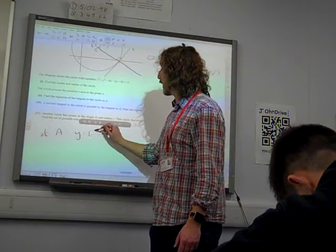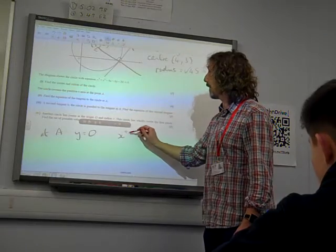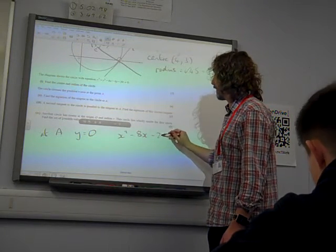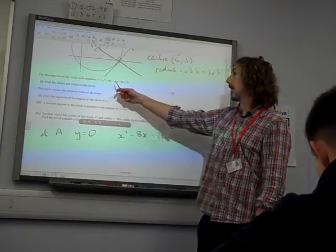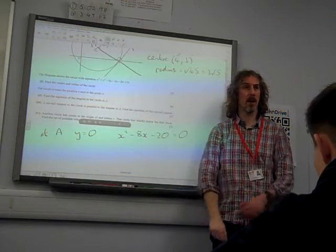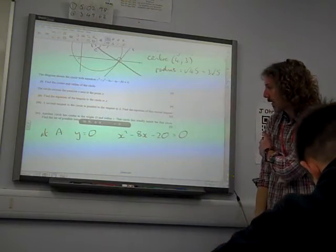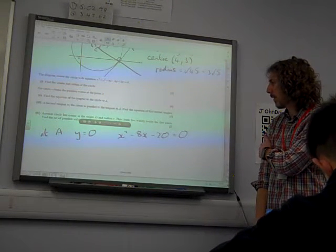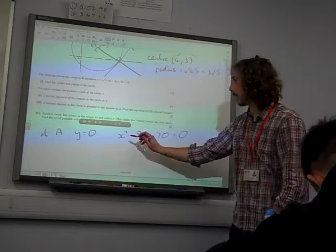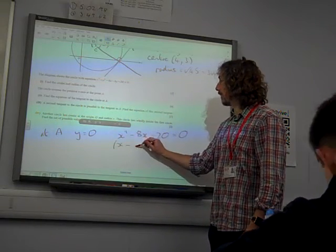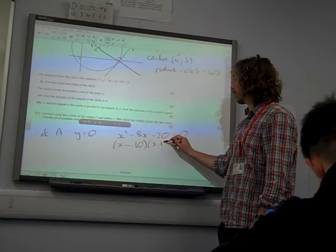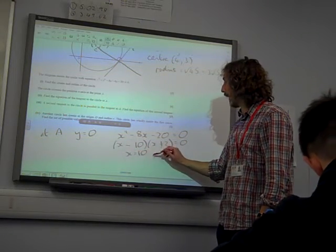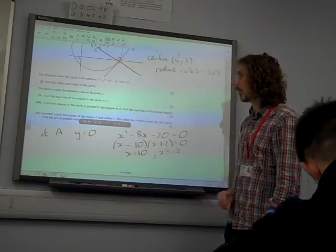At A, y equals 0, so we're left with x squared minus 8x minus 20 being 0. That's if we replace y with 0 in our equation of the circle. Does it? 10 and 2. Yes. x minus 10x plus 2.